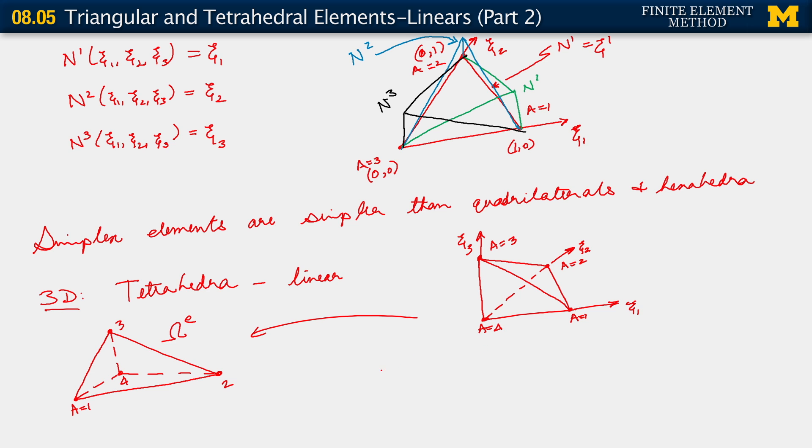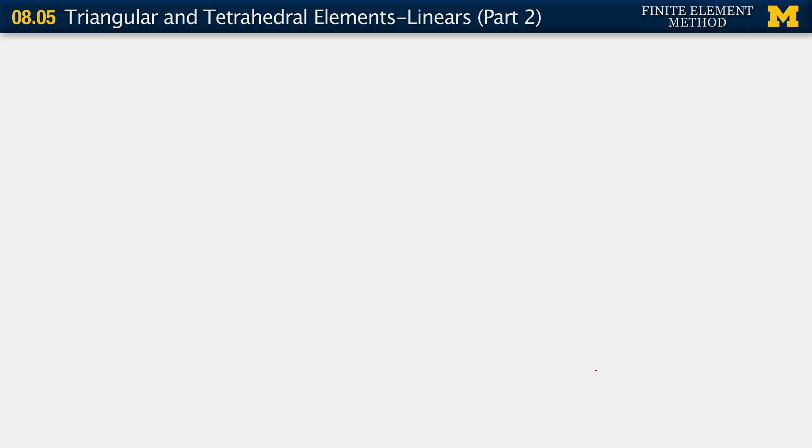For convenience, again, we will define now xi 4 equals 1 minus xi 1 minus xi 2 minus xi 3. All right, using the same sort of idea. In that case we used this idea of area coordinates. Now we can, I guess, effectively call them volume coordinates. But the idea is the same.